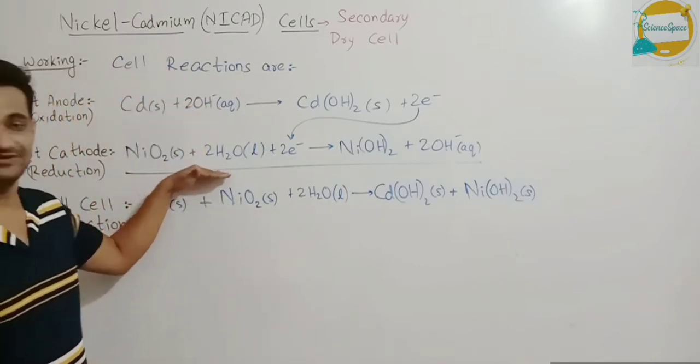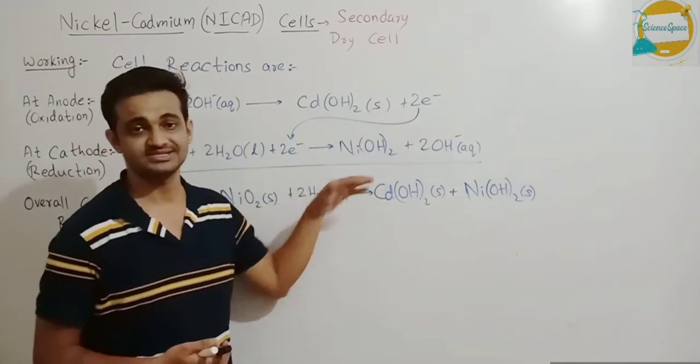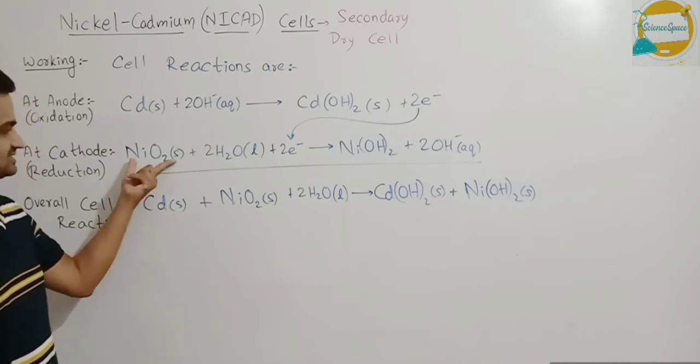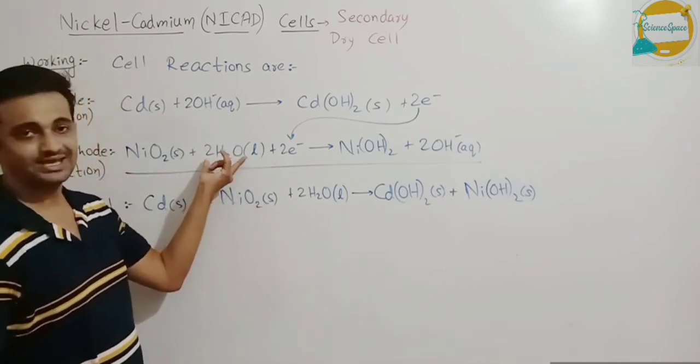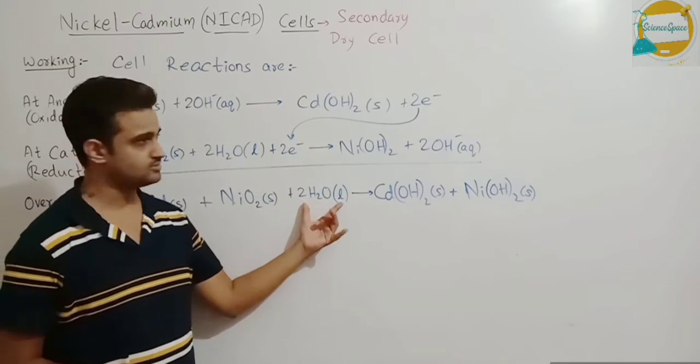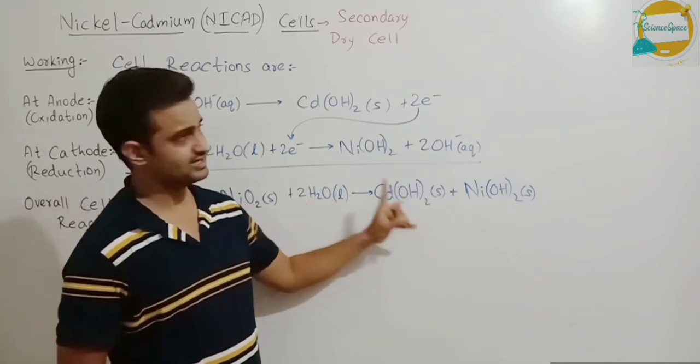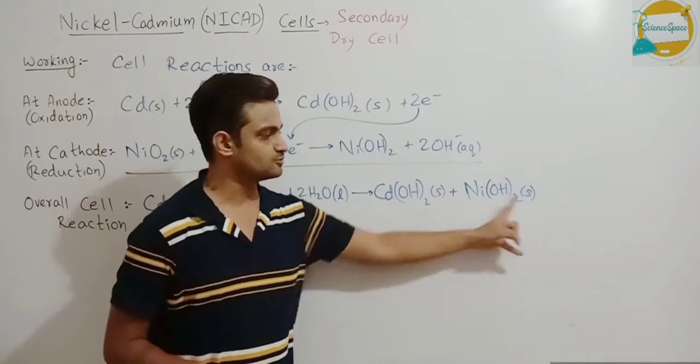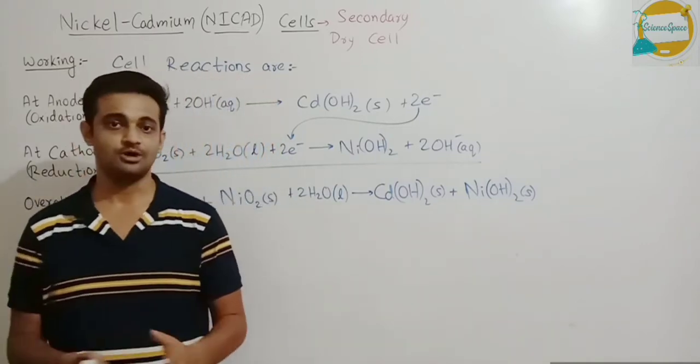And in 2 reactions ko mila kar net cell reaction ka aise form hooga? By adding left hand side to left hand side and right hand side to right hand side. Toh isse kya milega? Cadmium in solid form plus nickel oxide in solid form plus two times of water in liquid form. And right side me kya milega cadmium hydroxide ke saath nickel hydroxide add hooga dhono bhi solid form me present rehenge on the electrodes.